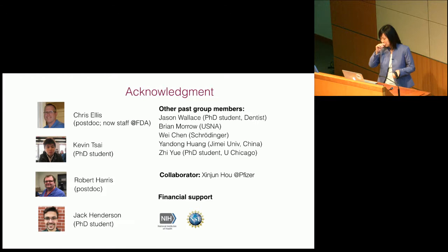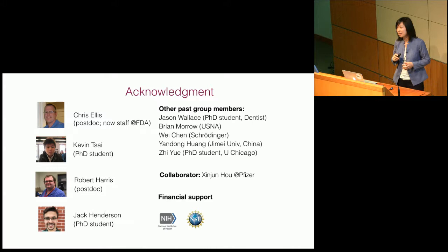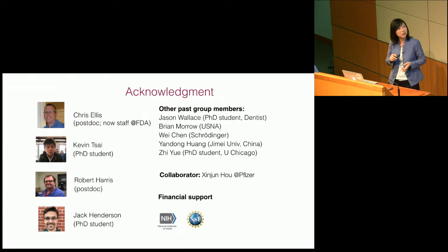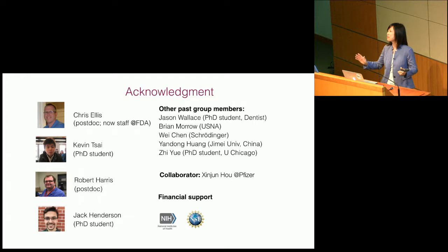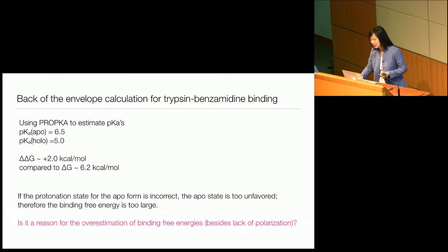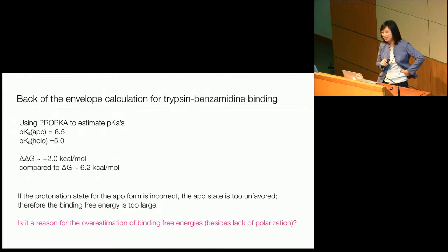With that, I'd like to acknowledge the people who performed this work. Chris Ellis was the postdoc who worked on the BACE1 and catepsin systems and is now a staff member at the FDA. Kevin is a graduate student who did a fantastic job continuing work on catepsin D and BACE1. Robert Harris performed the free energy calculations. Jack Henderson is a PhD student who works on the BACE2 system. Now I want to show you the answer to the question I posed earlier: why did we not see an error for the classical trypsin-benzamidine calculation? There's a big pK shift there — if you translate that into a free energy change, the error is about 2 kcal/mol, which is very large considering the binding free energy is only about 6 kcal/mol.